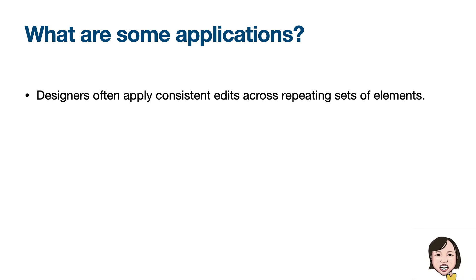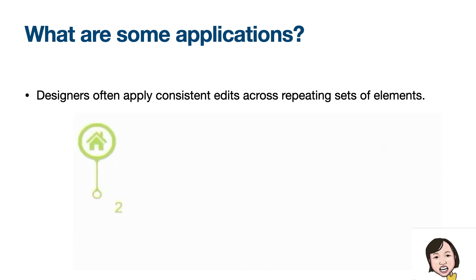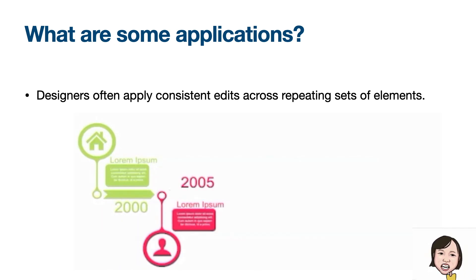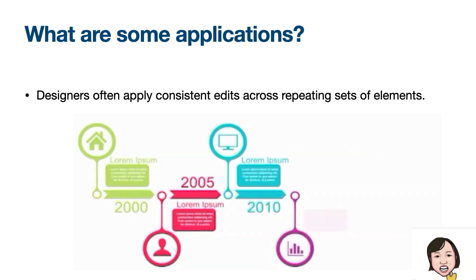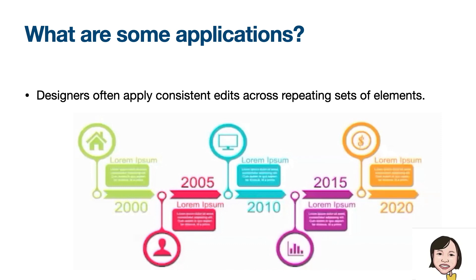So why do we want to compute correspondence? Designers often need to apply consistent edits across these repeating sets of elements. For example, consider this graphic design. I applied animation effects to the first set of elements representing the year 2000. Now I want to apply the same style of animation effects to the rest of the design, instead of applying the animation one element at a time, which I had to do in order to prepare the slide. I would like to do something like this.